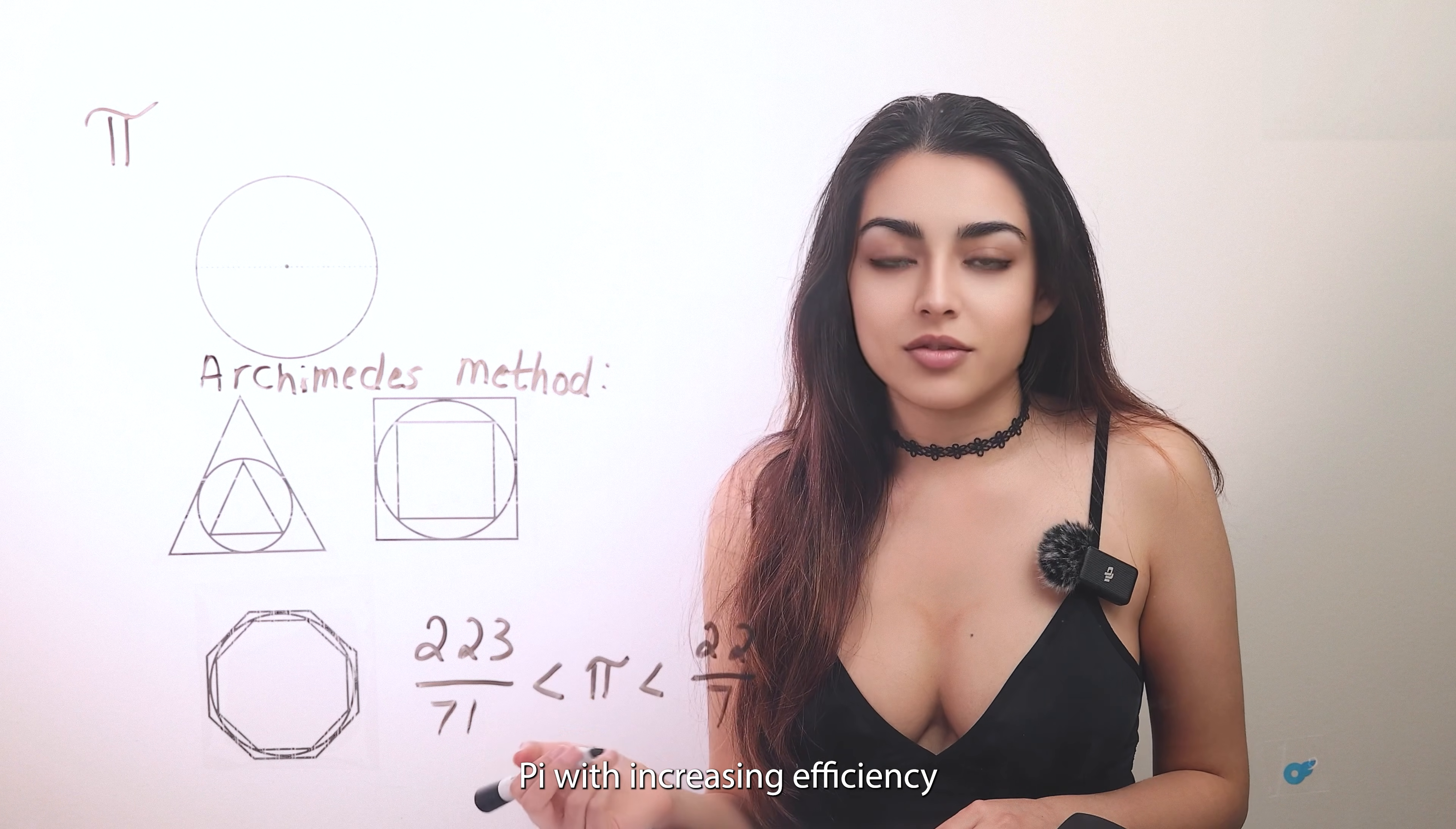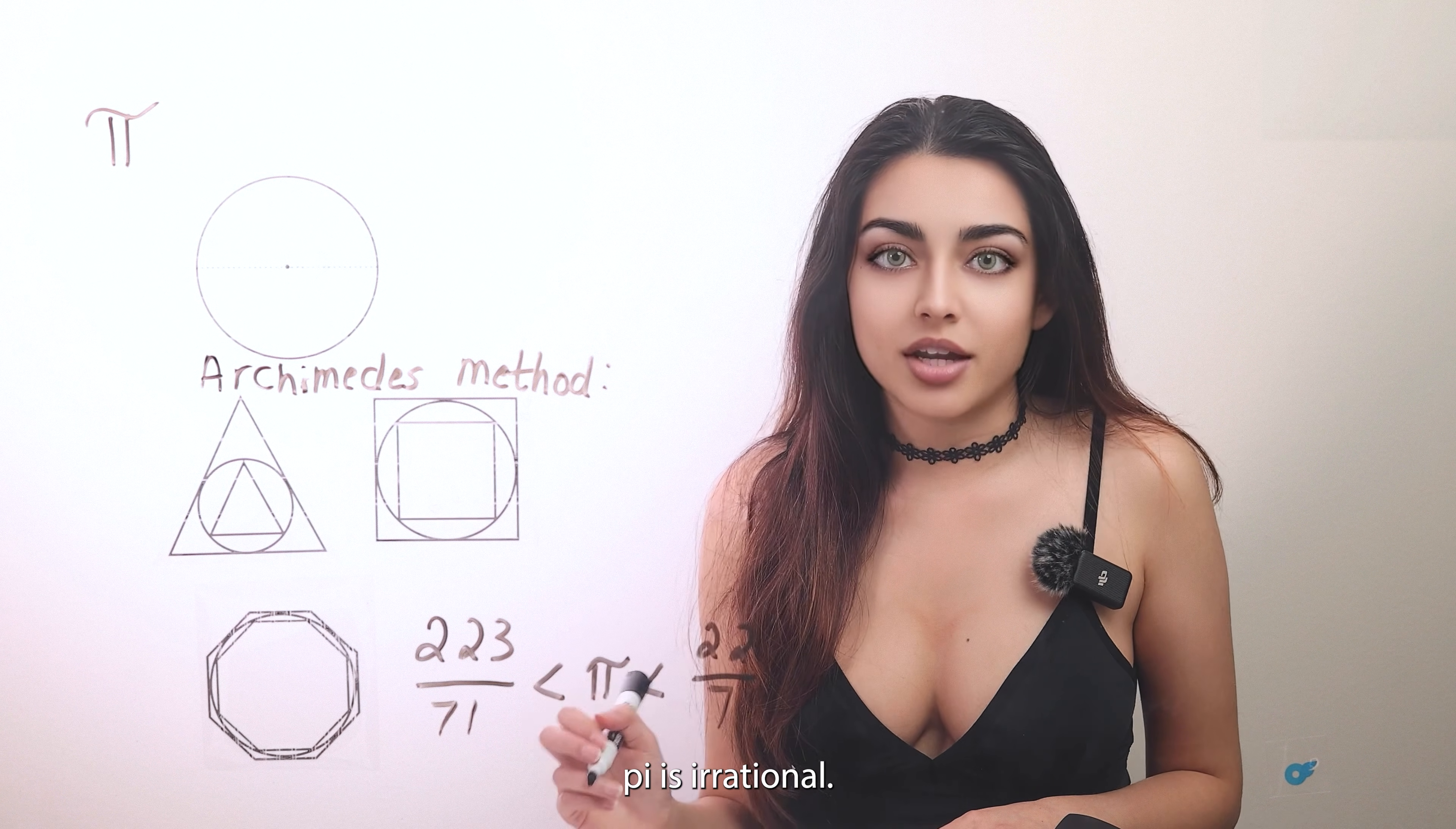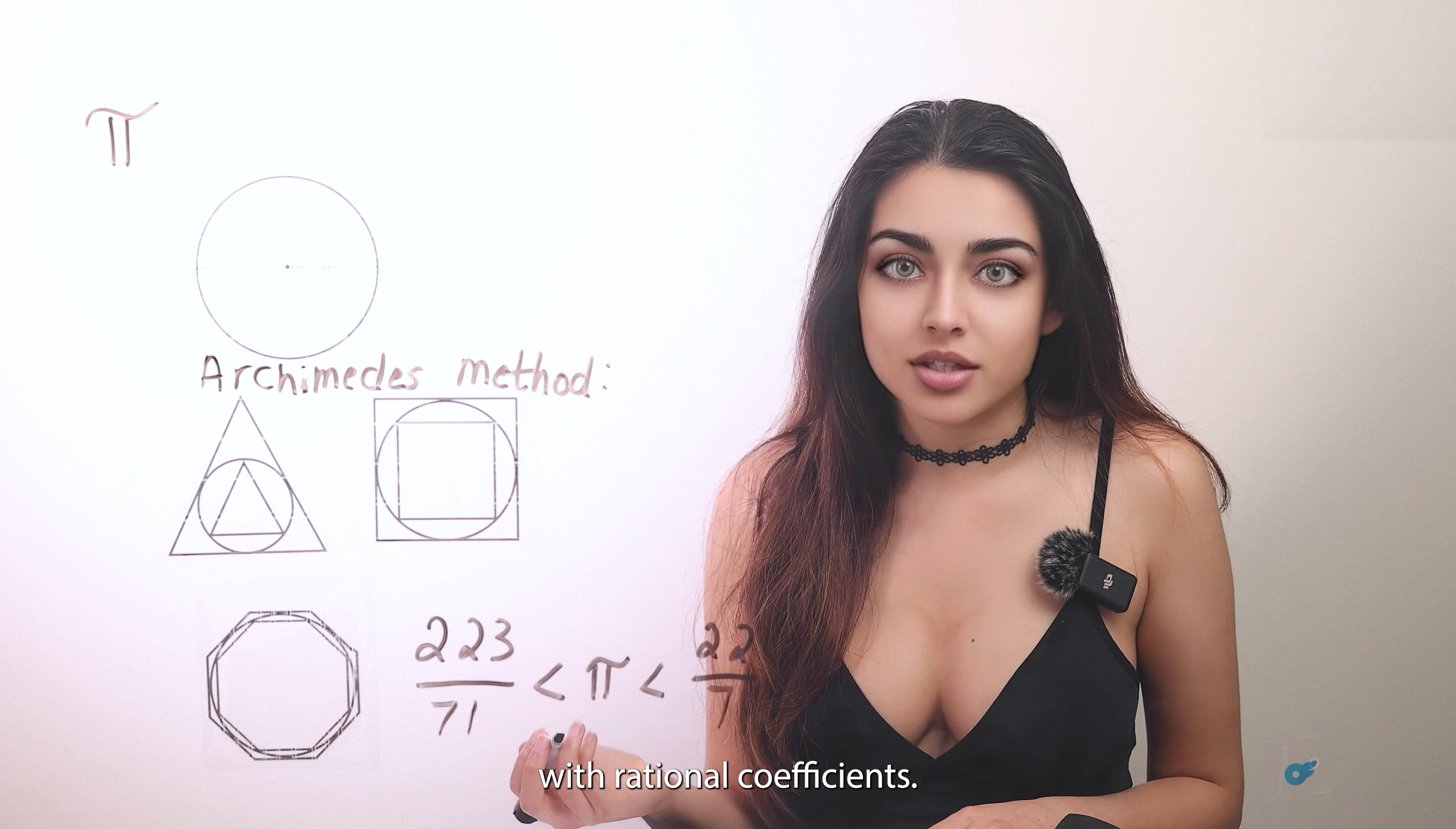In 1767, Swiss mathematician Johann Henrich Lambert proved pi is irrational. In 1882, Ferdinand von Lindemann proved pi is transcendental, which means pi cannot be a solution to a polynomial equation with rational coefficients.